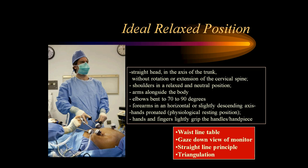The ideal relaxed position, as shown in this picture: the surgeon should have a straight head in the axis of the trunk with no rotation or extension of the cervical spine; shoulders in a relaxed and neutral position; arms adducted alongside the body; elbows bent to 70 to 90 degrees; forearms in horizontal or slightly descending axis; hands pronated in a physiologically resting position; and hands and fingers lightly gripping the handle. So waistline table, gaze-down view, straight line principle, and triangulation are all very important in laparoscopic surgery.